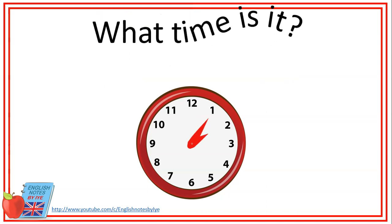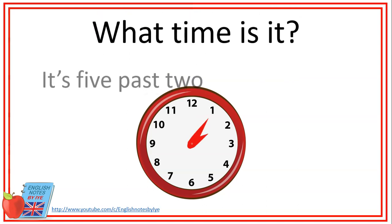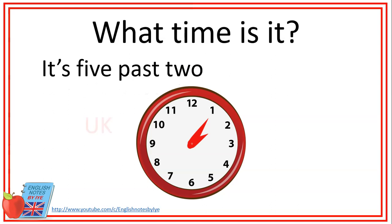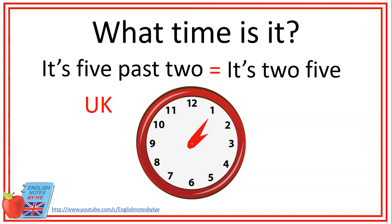Por ejemplo, what time is it? En inglés británico diríamos it's five past two — son cinco pasadas de las dos. Y en inglés americano diríamos it's two five — son dos con cinco. Como pueden ver, el inglés americano es un poco más sencillo: solo decimos dos cinco, dos diez, dos veinte, dos treinta, dos cuarenta, etc.